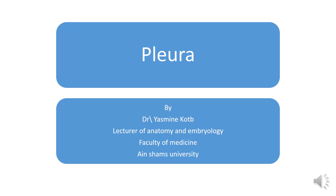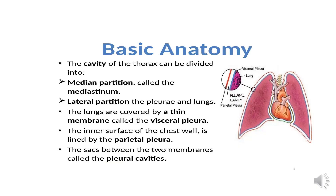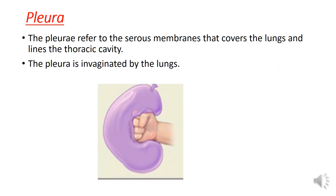In this lecture we are going to cover the pleura. The cavity of the thorax can be divided into a medial partition called the mediastinum and two lateral partitions which are occupied by the pleura and the lungs. The pleura is a serous membrane which is invaginated from its medial side by the lung. We have two pleural sacs which occupy the lateral parts of the thoracic cavity, separated from each other by the mediastinum.